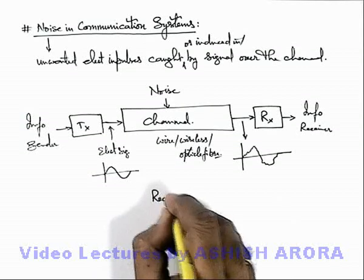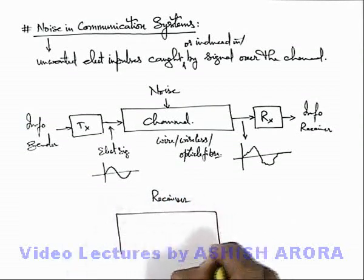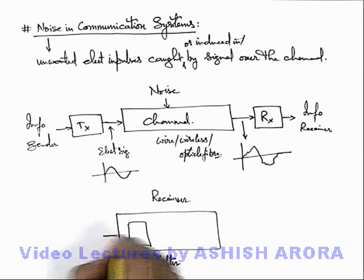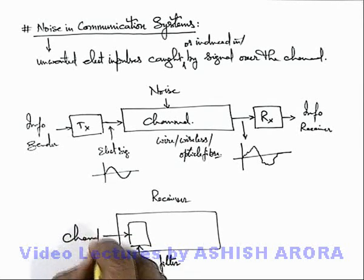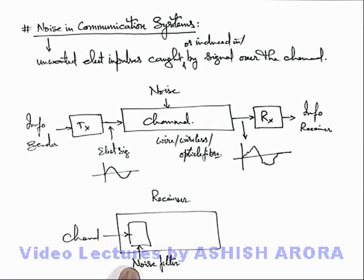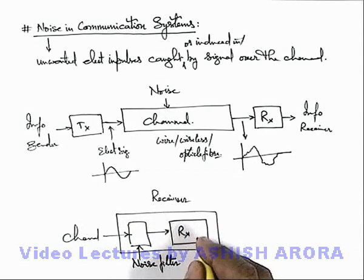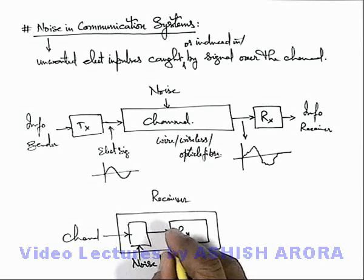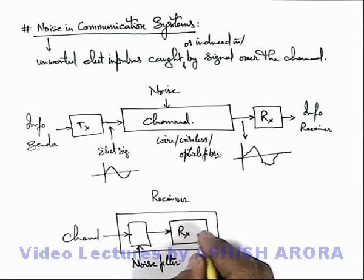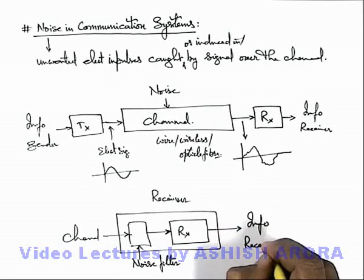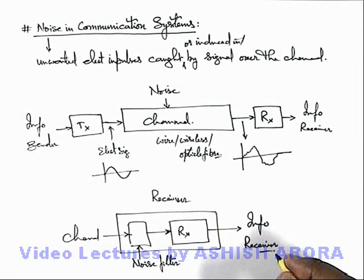A typical receiver consists of two things: first, a noise filter. Whatever information is fed to the receiver in electrical form from the channel is first passed through the noise filter, and then given to the electrical receiver, which has amplification units as well as a transducer. Finally, it is delivered to the information receiver in an understandable form.